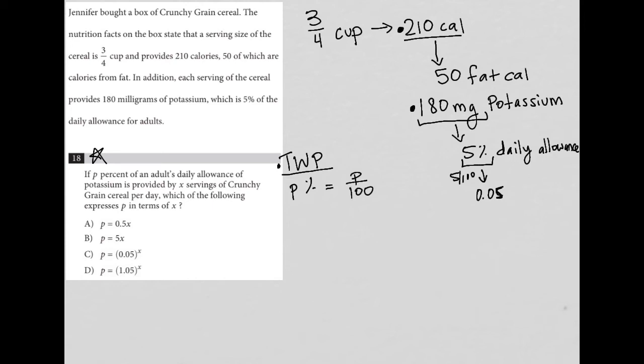So if P% of an adult's daily allowance of potassium, what's the daily allowance of potassium? We know it's 5% per serving, because this three-fourths a cup is one serving.